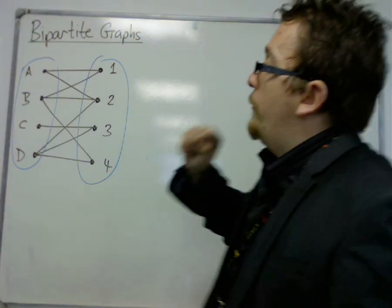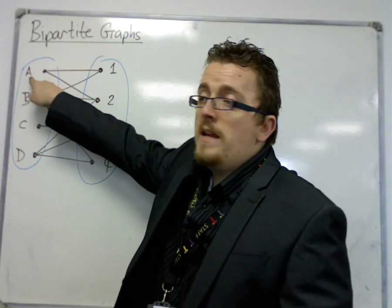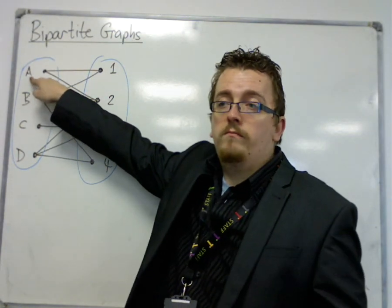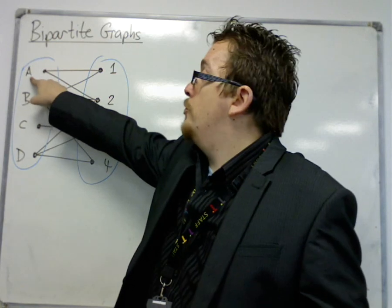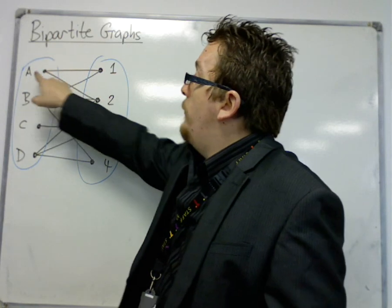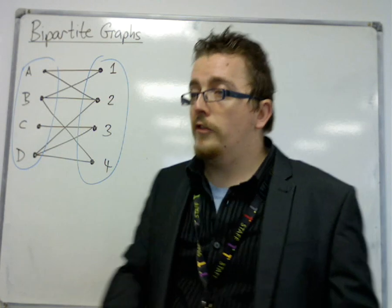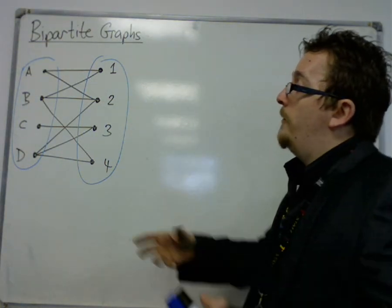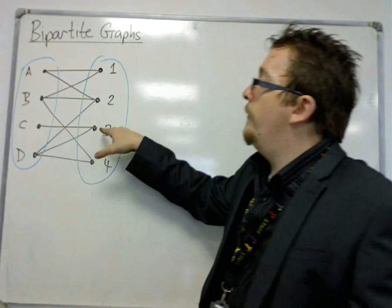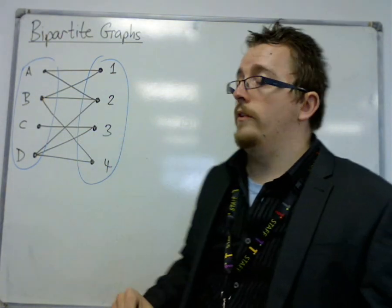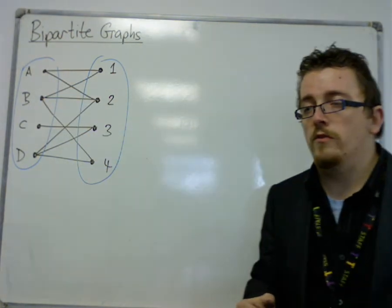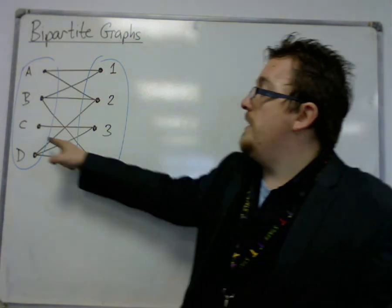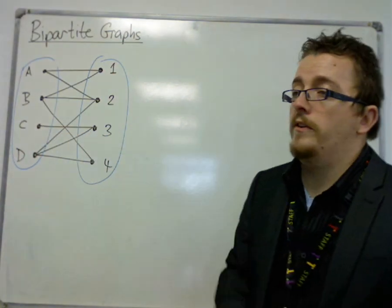So you could say that laborer A, whoever he is or she is, is best at doing task 1 and task 2. They are skilled in doing those tasks, whereas A is not skilled in doing 3 or 4 and so will not be doing either of those. C, for example, is only skilled at doing task 3.